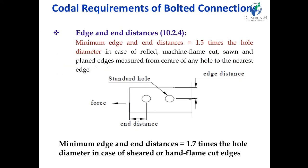The next parameter is edge distance or end distance of the bolt. The distance from the bolt center to the end of your plate is called end distance or edge distance. Edge distance is equal to 1.5 times the hole diameter in the case of rolled or machine flame-cut edges, given in clause 10.2.4. The minimum edge and end distance should be taken as 1.7 times the hole diameter in the case of sheared or hand-flame-cut edges. In our case, we always use 1.7 times the hole diameter.